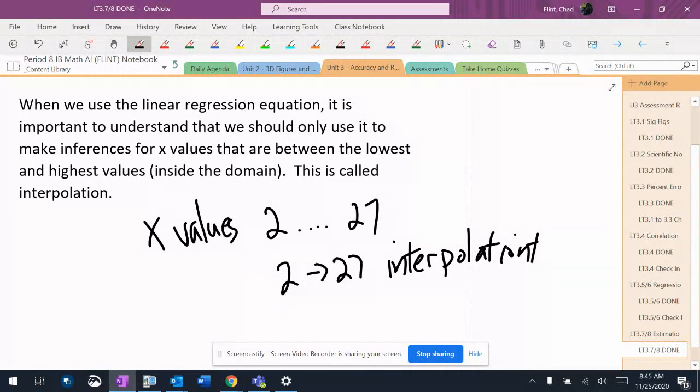This is because your data only exists in that set of x values, which is your domain. Outside of that, you don't really know if your equation applies to it. You can assume that it applies and use it to make an estimate, but it's not a valid estimate because that wasn't included in your set of data. Outside of that set of data, you don't know what actually happened.